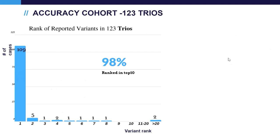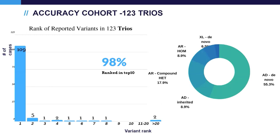We first evaluated the diagnostic rate from 123 trio cases. On the graph, the x-axis is the ranking of the diagnostic variant and the y-axis is the number of cases. Out of 123 trio cases, 109 had the diagnostic variant listed as the top-ranked variant. Overall, 98% of cases had the diagnostic variant listed in the top 10. Our diagnoses include all possible inheritance patterns: autosomal dominant de novo and inherited, autosomal recessive compound heterozygous and homozygous, and X-linked de novo and inherited situations.